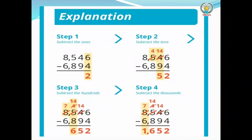Explanation: Step one — subtract the ones place digits first. Six minus four gives two, so we write two. Step two — subtract the tens place digits. Four minus nine cannot be done because four is smaller than nine, so we borrow one from the hundreds place. Five becomes four after borrowing, and four becomes fourteen. Fourteen minus nine gives five.